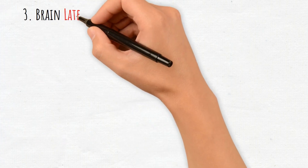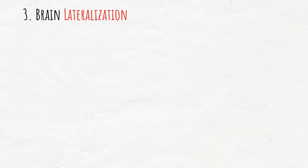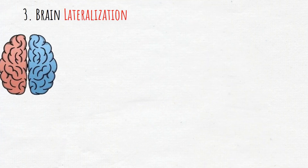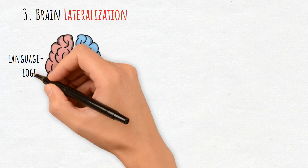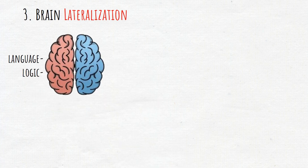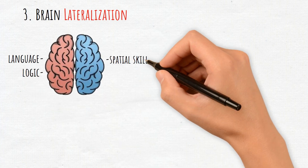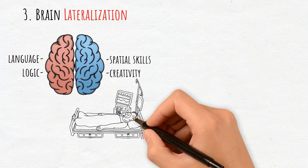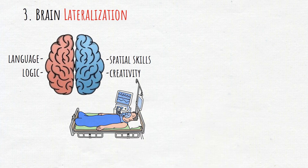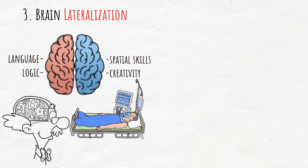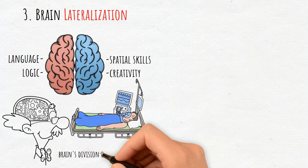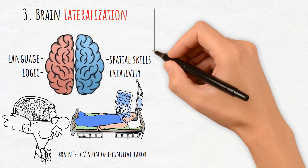3. Brain Lateralization. The left hemisphere is dominant for language and logic, while the right hemisphere manages spatial skills and creativity. Studying patients with hemisphere damage helps understand the brain's division of cognitive labor.